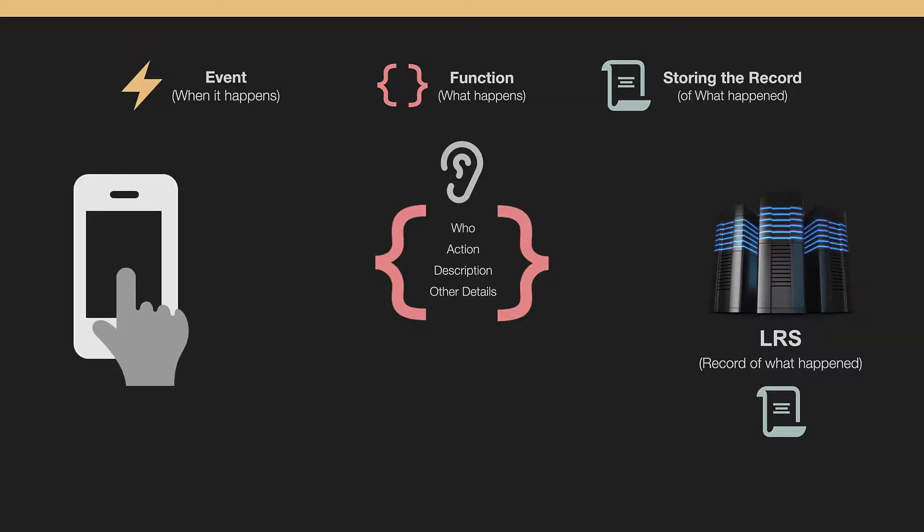One of the challenges with SCORM is it really did not allow you to transfer information from one system to another easily — it took a lot of migration and effort. But learning record stores allow you to transfer those records pretty easily. It's more flexible, and it allows the learner to take a history of what they've done in one organization and transfer it to a different organization. Keep in mind the LRS is this kind of record of what's happening.